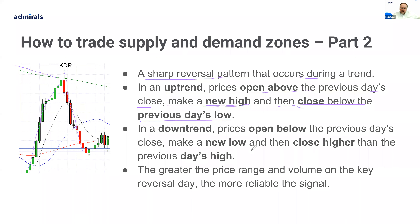In a downtrend, price will trade below the previous day's close, make a new low, but then reverse and close higher than the previous day's high. That shows the bulls have stepped in, wrestled control of the market, and are pushing it upwards — we're likely to go upwards for the next few sessions. As the slide says, the greater the price range and volume on the key reversal day, the more reliable the signal. You'll find these printing on one-minute charts and on monthly charts — they don't happen as often as we'd like, but when they do it's well worth taking note of.